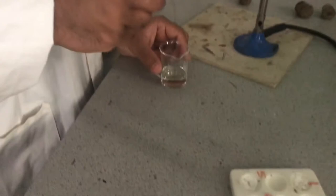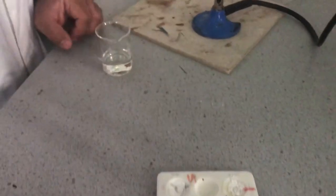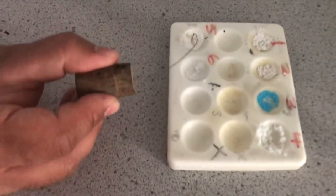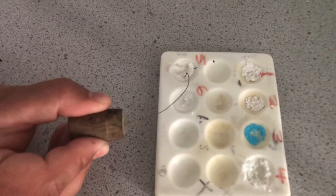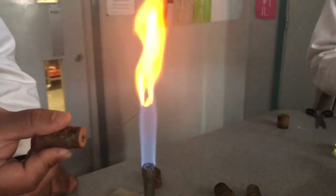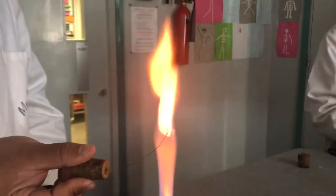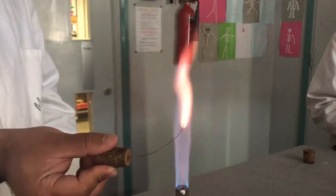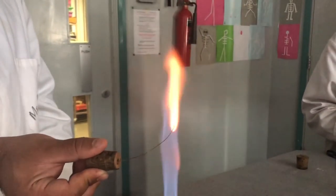There we go. Now moving on to the next compound. With my clean wire, again, just place a little bit of that metal compound onto the loop, back into the Bunsen burner flame. This is giving us a lilac color. It's a bit harder to see this one, but you can see faint lilac color, especially here at the top of the flame.